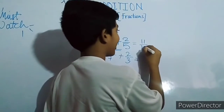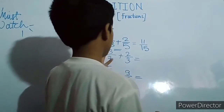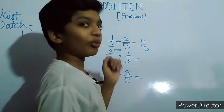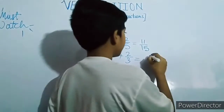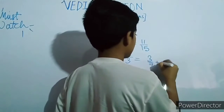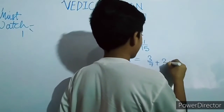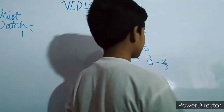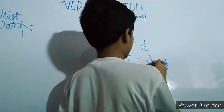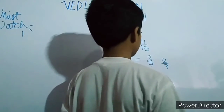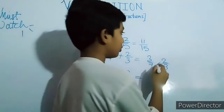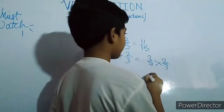Now three by seven plus two by three. Here, three by seven plus two by three — no changes, the same process. Just cross multiply: seven into two plus three into three.